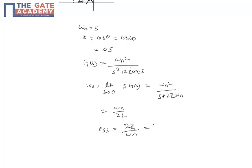So that is equal to 2 × 0.5 divided by 5, which equals 0.2. The steady state error for the unit ramp input for this particular system is 0.2.